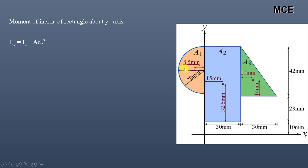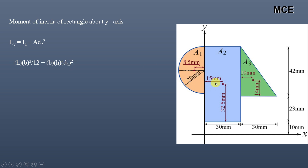Similarly, the moment of inertia of the rectangle about the y-axis equals h·b³/12 + A·d₂², where h = 65 mm (parallel to the y-axis) and b = 30 mm (perpendicular to the y-axis). The distance between the y-axis and the centroid of the rectangle is 15 mm. Substituting h = 65, b = 30, and d₂ = 15 mm gives 0.585 × 10⁶ mm⁴.